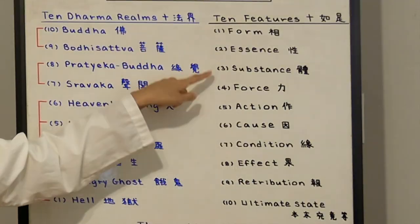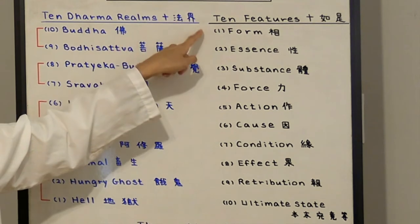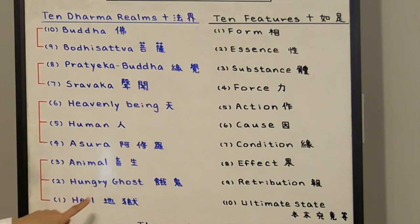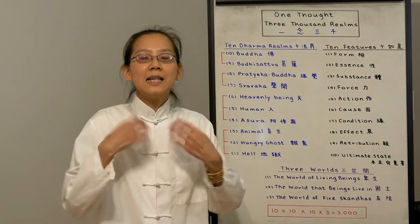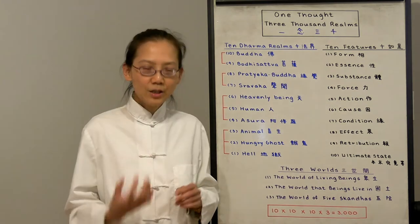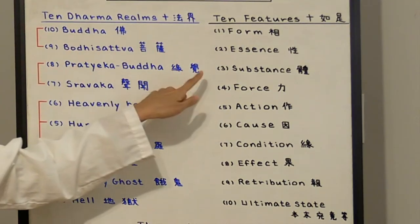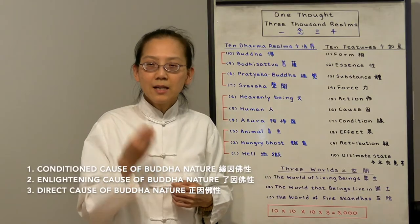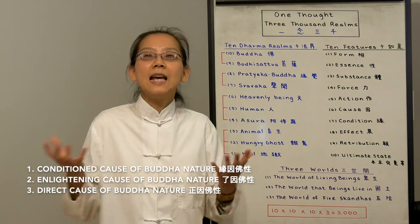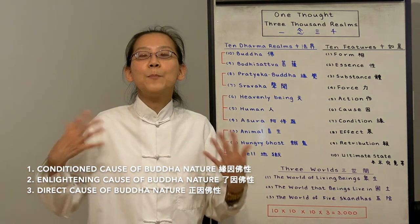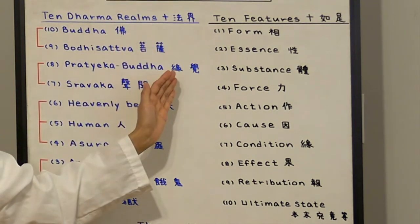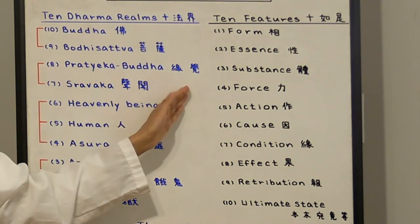Number three, substance is basically a combination of form and essence, or we call body and mind. The hell being, their substance is deteriorating body and mind because they're always in degradation. On the other hand, Buddha's substance is their direct cause of Buddha nature. The body of Buddha is their suchness. We call it the Buddha body. So they have totally different form, essence and substance.